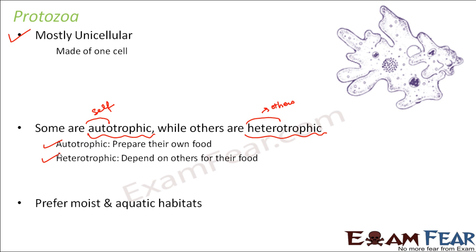Protozoa prefer moist and aquatic habitats. Most microorganisms prefer warm and moist places — that is why things spoil due to moisture or warm temperature. This is also why we have refrigerators: the low temperature inside makes it difficult for microorganisms to grow. Similarly, a dry dish lasts longer than one with water, because moisture favors microbial growth while its absence inhibits it.